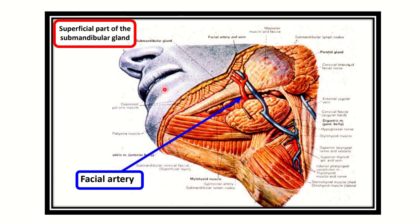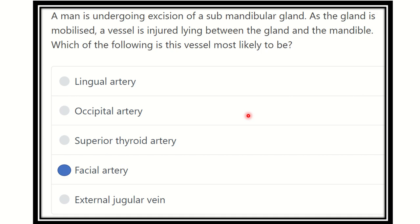In the second picture it is also very clear, showing other structures of the face — nose, teeth, and lip. Here you can see the mandible, here is the submandibular salivary gland, and between these two structures the facial artery is passing. So during the operation of the submandibular gland there is a risk of injury to this vessel, which is the facial artery. So our final answer is the facial artery.